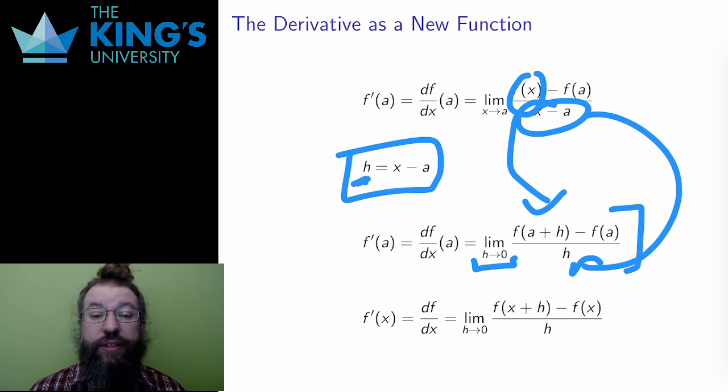This is the same idea, still calculating the slope of the tangent lines, but it turns out that this form with a single h in the denominator turns out to be a fair bit easier to work with.